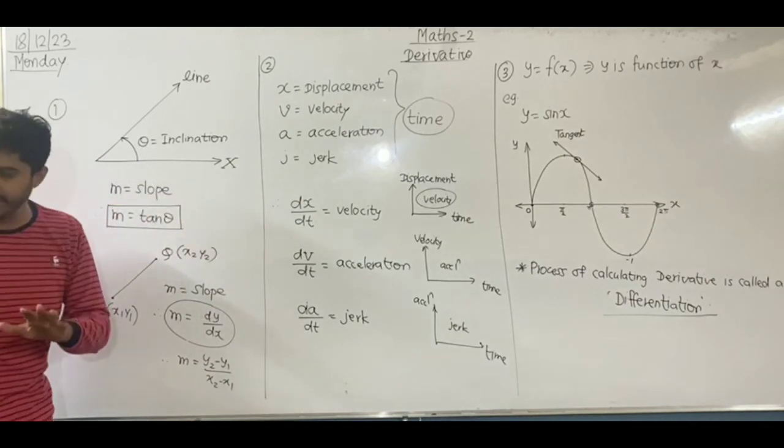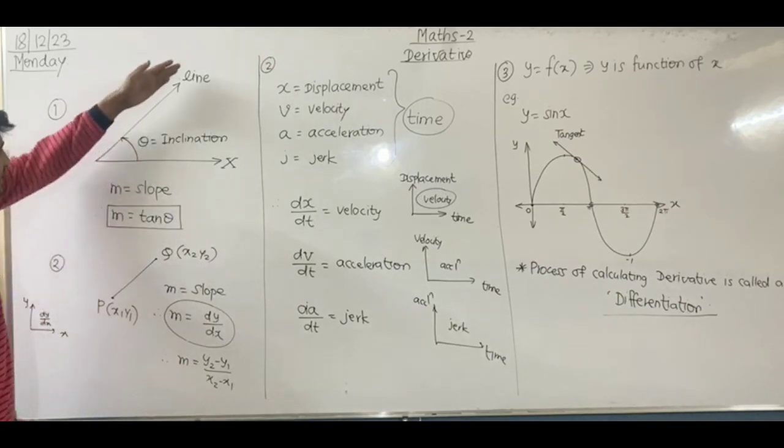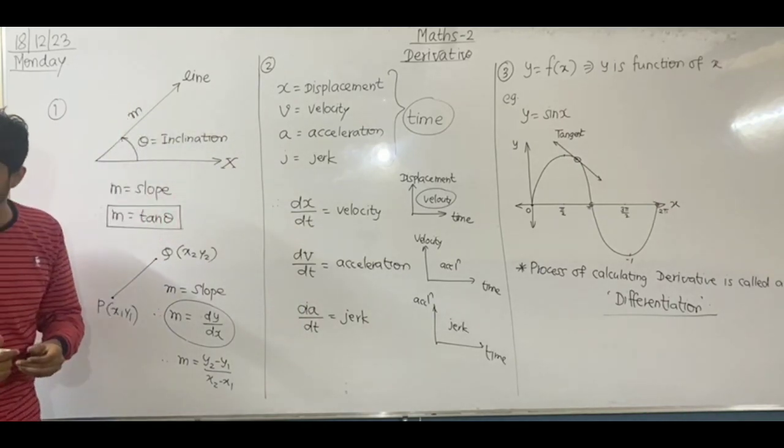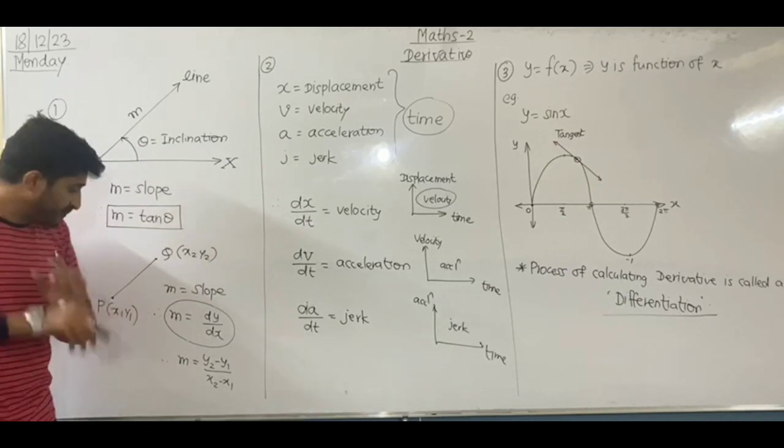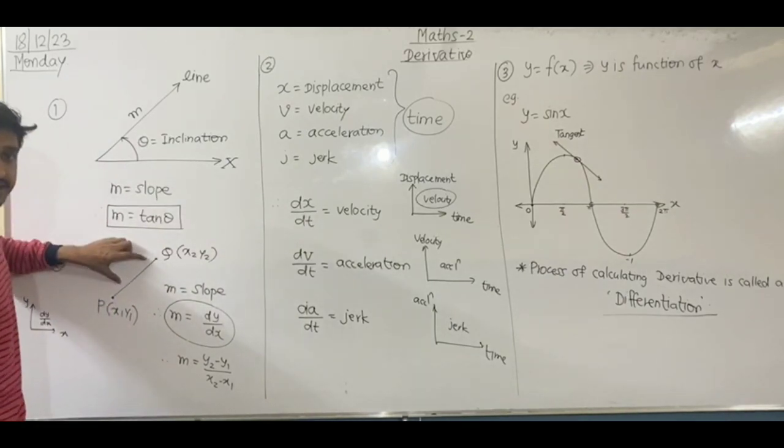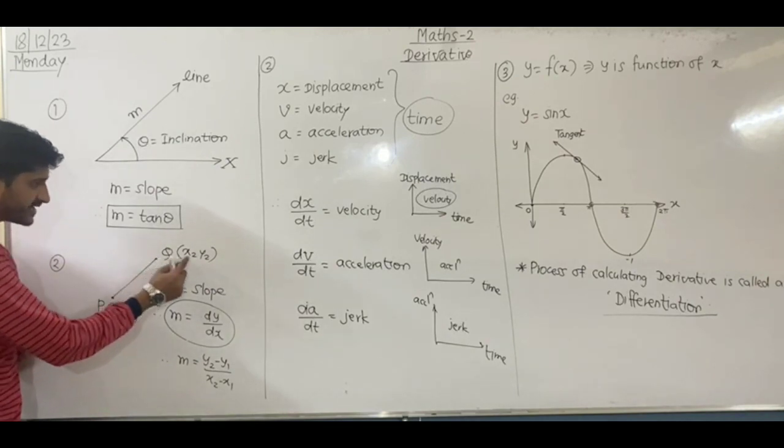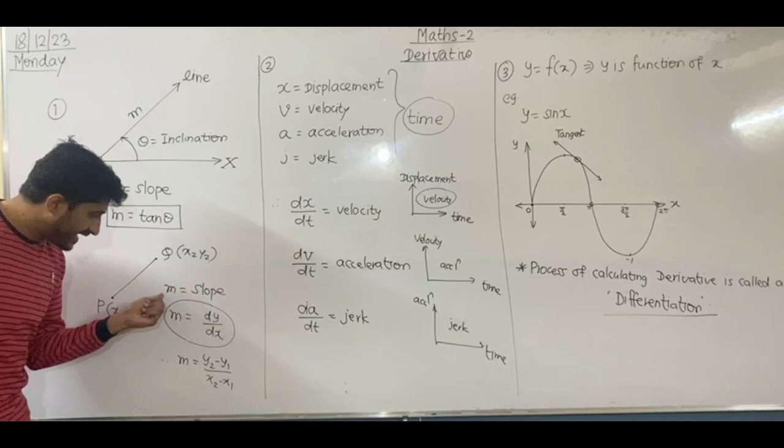Theta is the inclination. The slope of the particular line is tan of theta. But we can also find the slope if the line has two points, say x1, y1 and x2, y2.